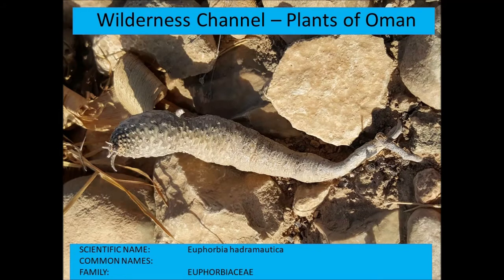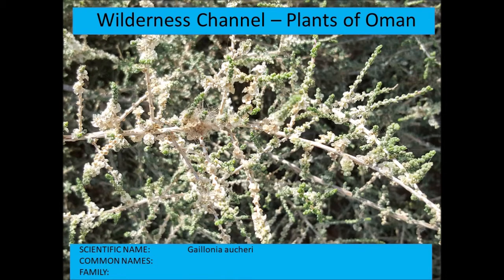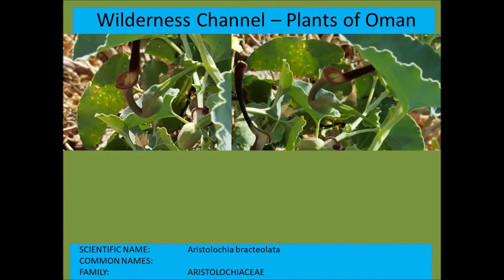Here's another specimen where you can see the scars where the leaves formed the nodes — it has a whorl-like structure. Galeonia or Kerrai features again. Aristolochia bracteolata — you can see the pipe-like structure of the flower here.